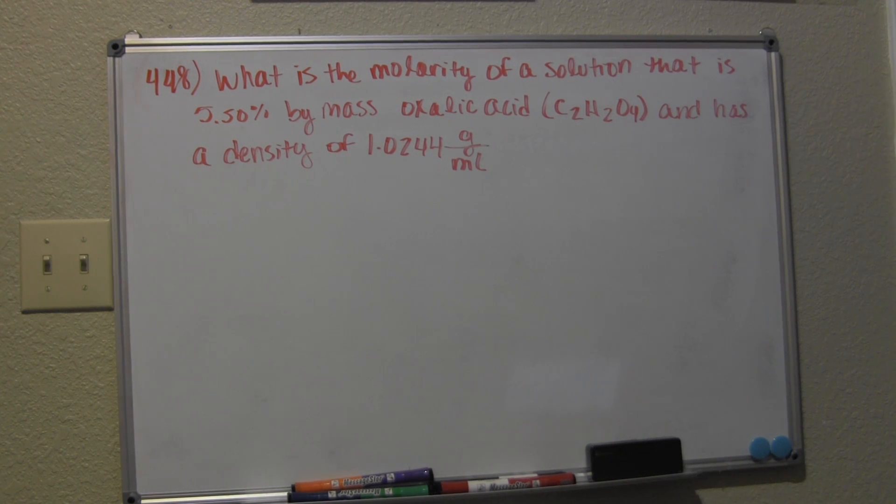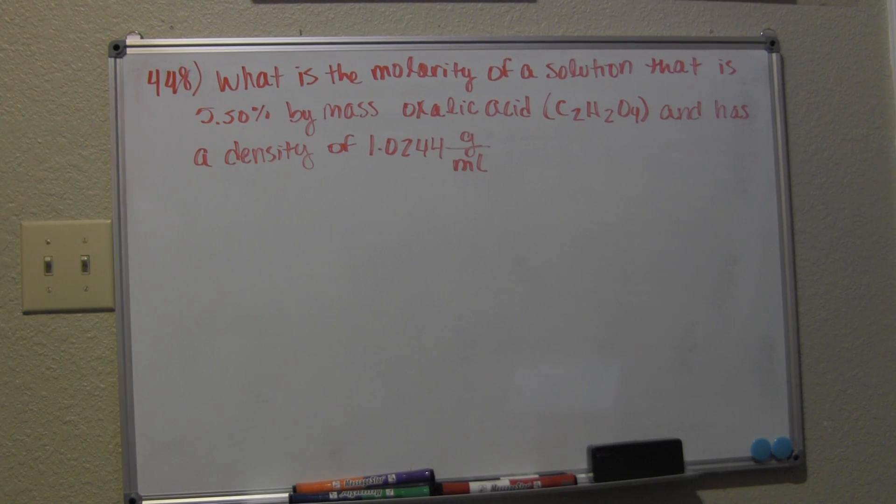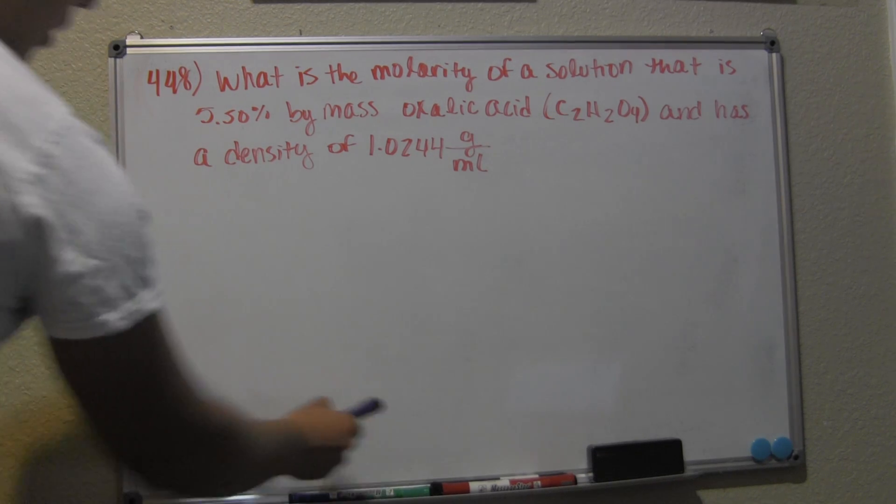Hey guys, I'm Daniel and the question we have here is: what is the molarity of a solution that is 5.50% by mass oxalic acid (C₂H₂O₄) and has a density of 1.0244 grams per milliliter?